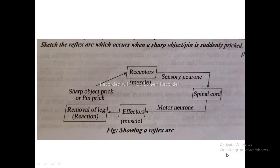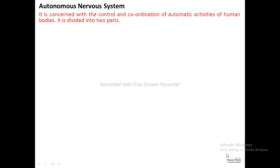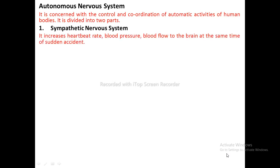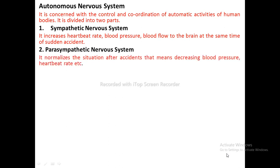Autonomic Nervous System: Concerned with control and coordination of automatic activities of the human body, divided into two parts. Sympathetic Nervous System: increases heartbeat rate, blood pressure, and blood flow to the brain during sudden accident or emergency. Parasympathetic Nervous System: normalizes the situation after accidents — decreasing blood pressure, heart rate, etc.